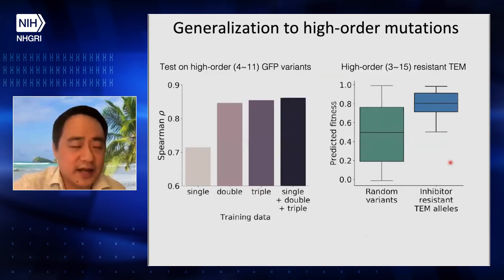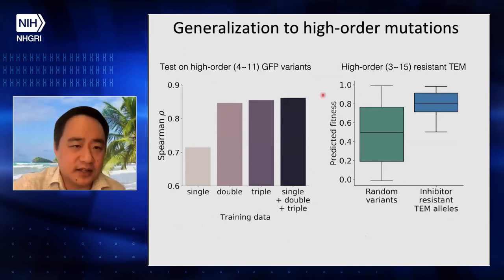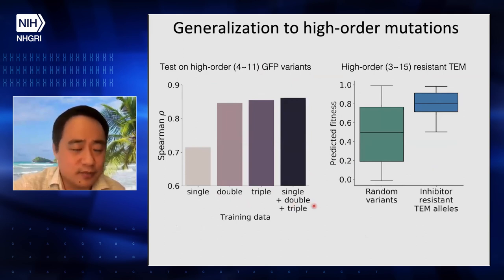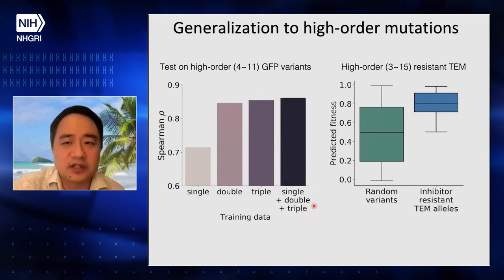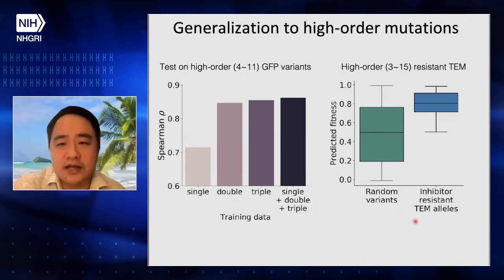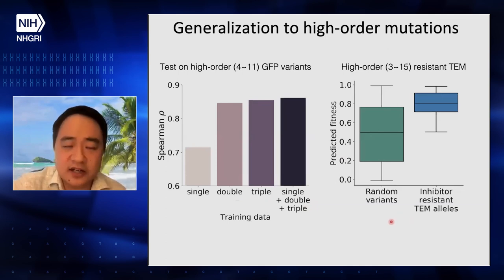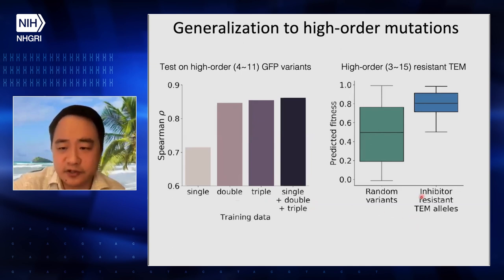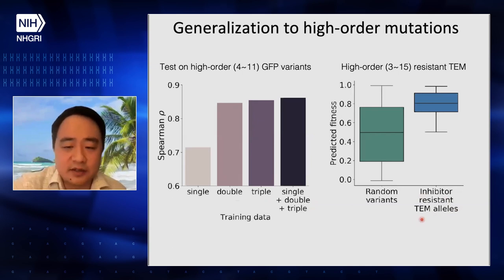We also tested the generalization of this model to high-order mutations. On the left, testing on GFP with single and double mutations, we were able to predict very high-order mutations, which suggests that pairwise interactions may be good enough — higher-order epistasis may not be that important. On the right, we also collected literature data on the TEM beta-lactamase antibiotic resistance alleles and show that our model is able to differentiate antibiotic-resistant alleles from random alleles.